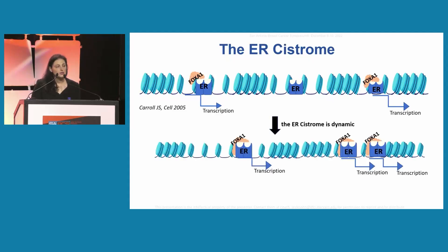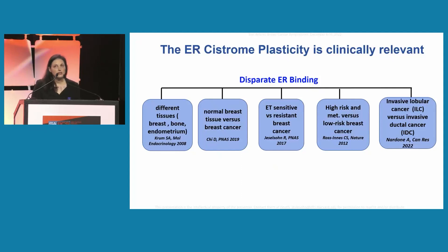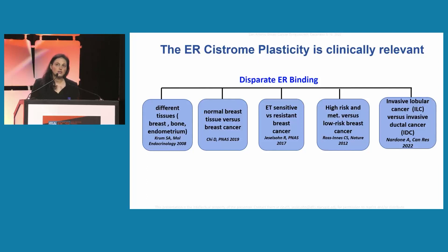We now know that the ER cistrome is highly dynamic and context-dependent. This ER cistrome plasticity is very important because it results in major transcriptional changes, and it is also highly clinically relevant. The ER cistrome is different in different tissue types, in normal tissue versus breast cancer, in endocrine treatment-sensitive versus resistant breast cancers, in high-risk metastatic versus low-risk breast cancers. More recently, my group showed that the ER cistrome is different in invasive lobular cancers versus invasive ductal cancers.